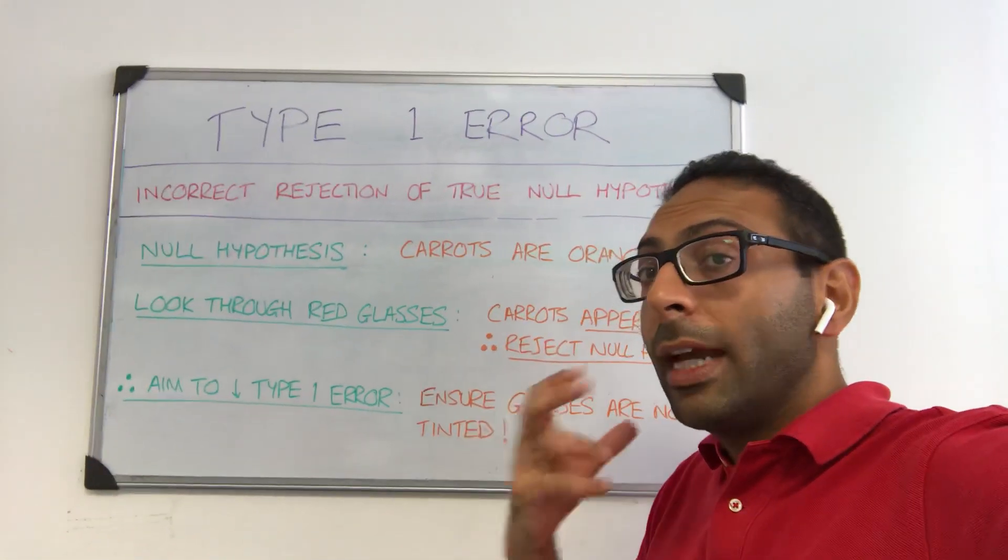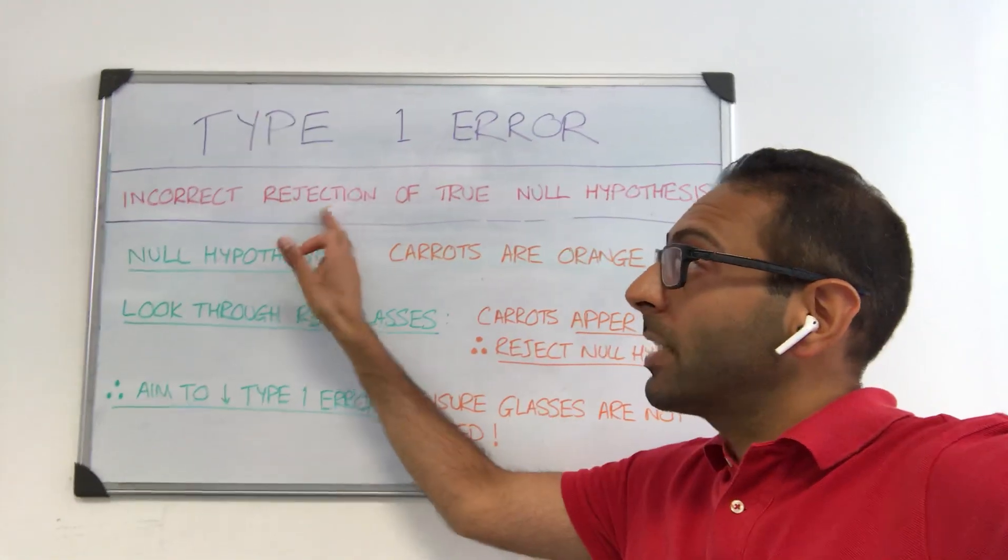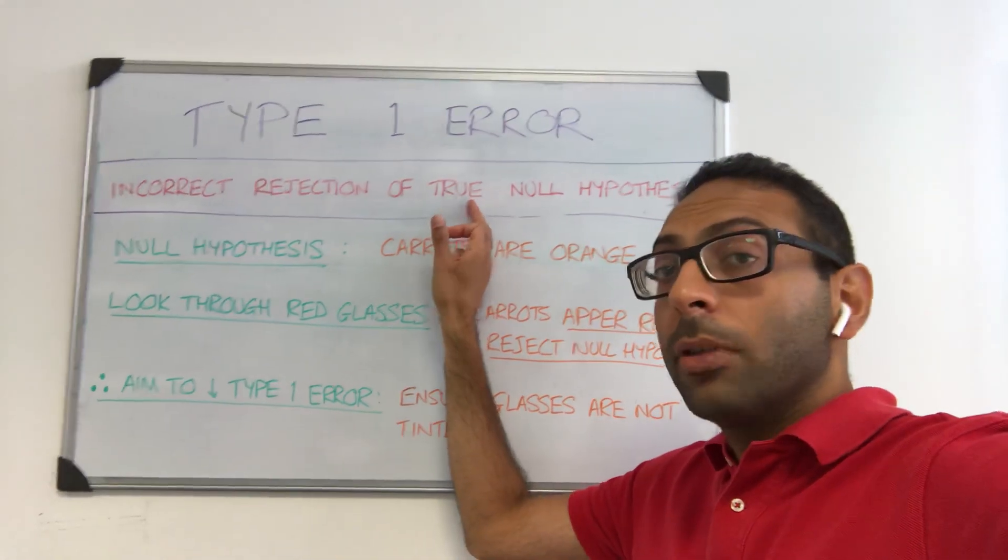That's an example of a type 1 error, where someone has incorrectly rejected a true null hypothesis.